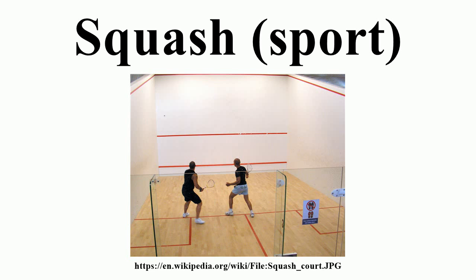Squash rackets used to be made out of laminated timber. In the 1980s, construction shifted to lighter materials with small additions of components like Kevlar, boron and titanium. Natural gut strings were also replaced with synthetic strings. In the 19th century the game increased in popularity, with various schools, clubs and even private citizens building squash courts.